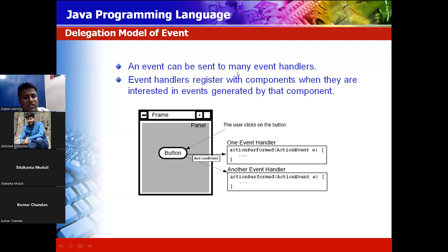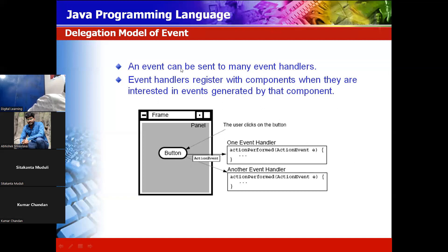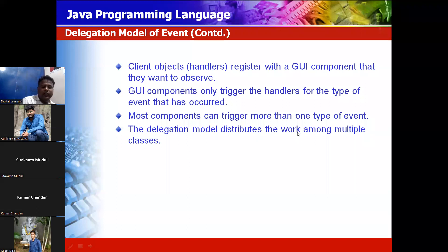One event can be sent to many event handlers, and event handlers register with the components when they are interested in those events. If you work with both keyboard and mouse, you can register for both of them. A client object registers with a GUI component to observe the events it wants.